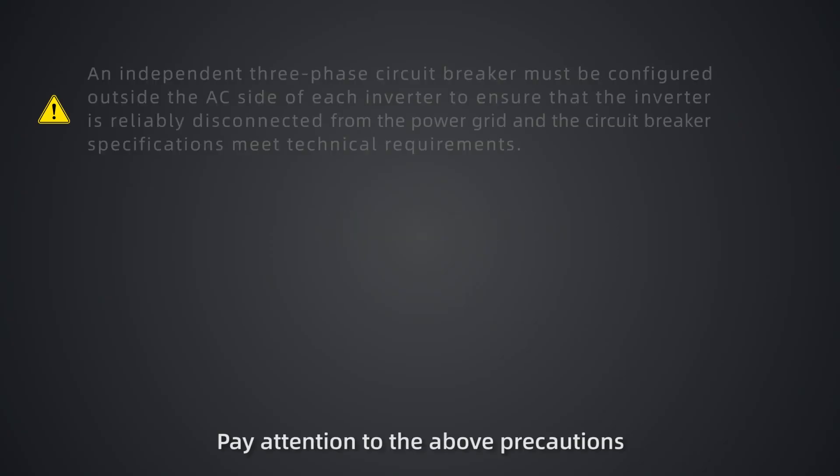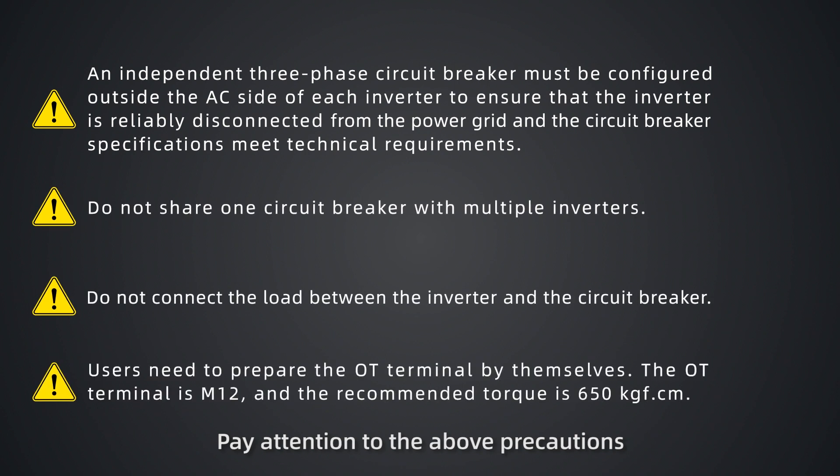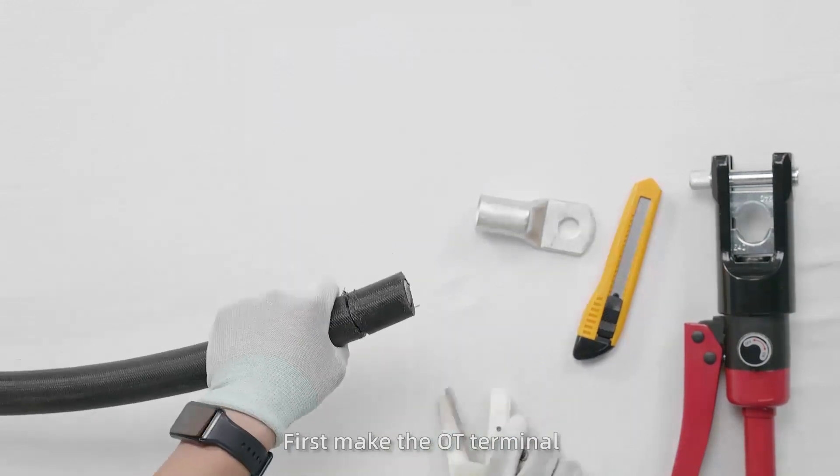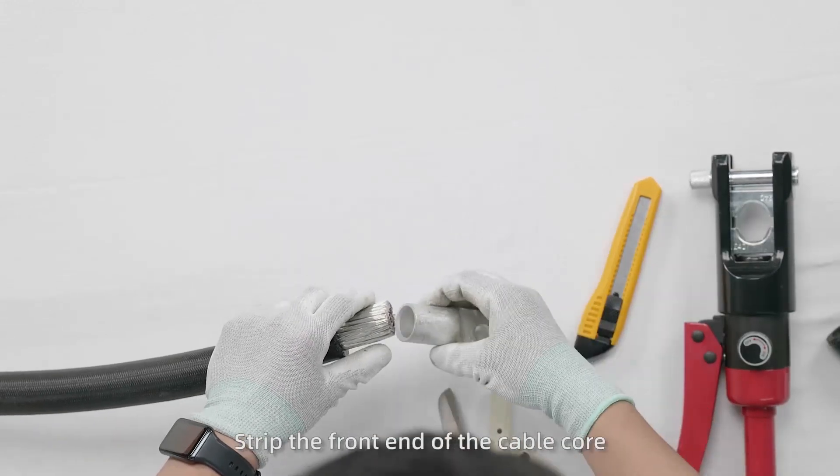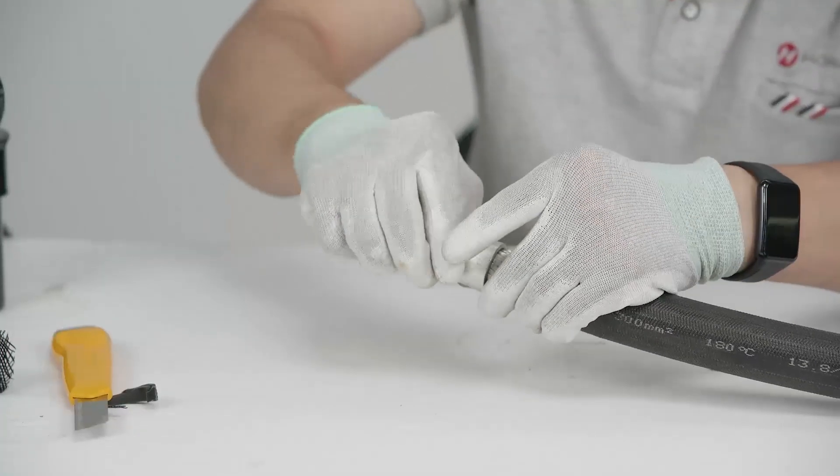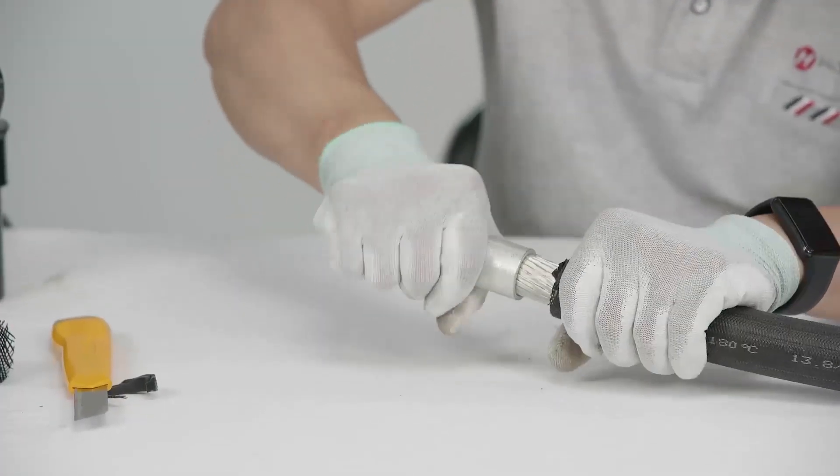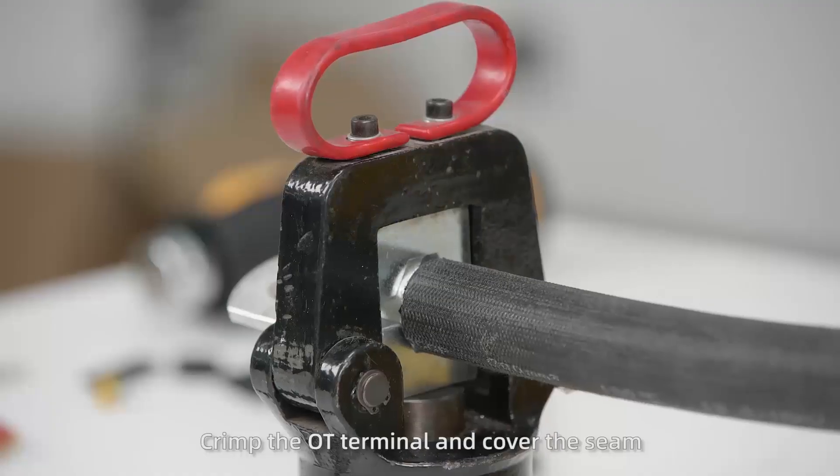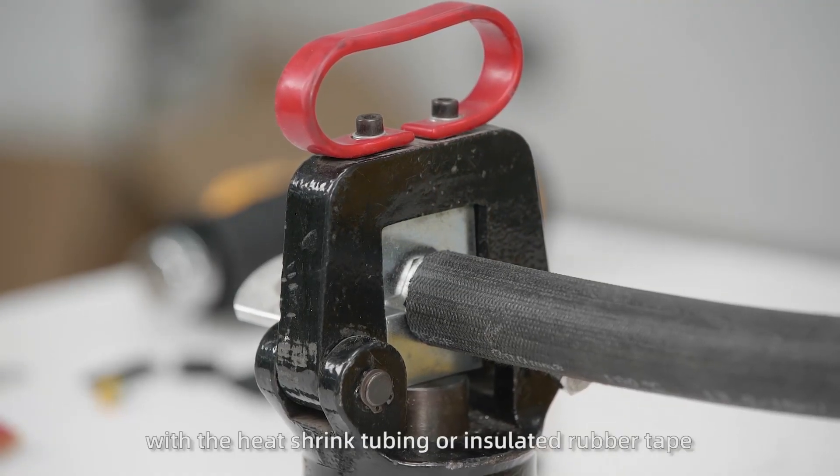Then, connect cables on the AC side. Pay attention to the above precautions before cable connection on the AC side. First, make the OT terminal. Strip the front end of the cable core. Crimp the OT terminal, and cover the seam with the heat shrink tubing or insulated rubber tape.